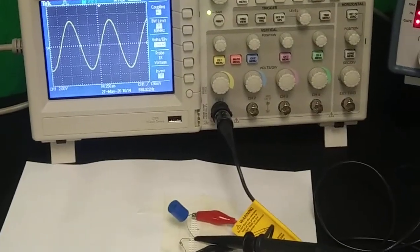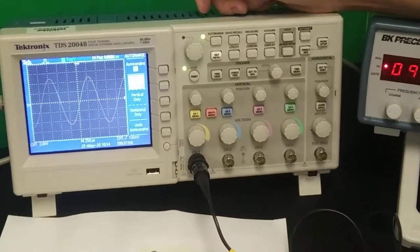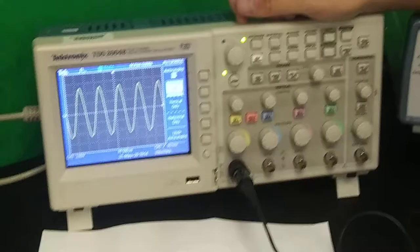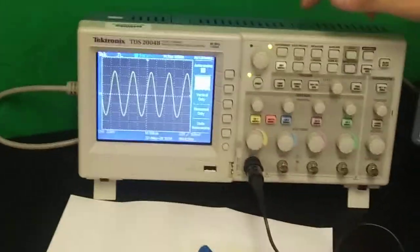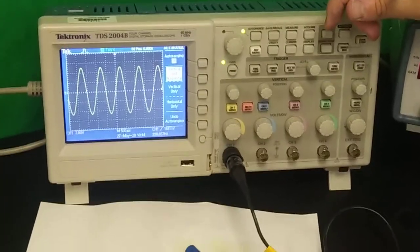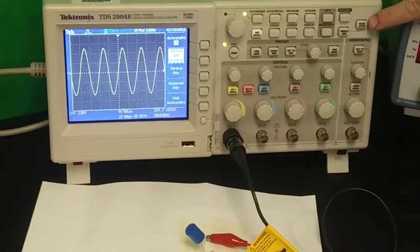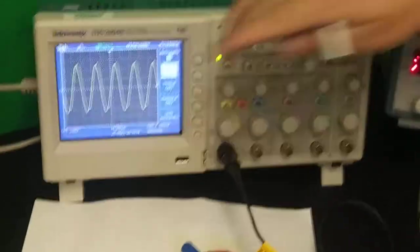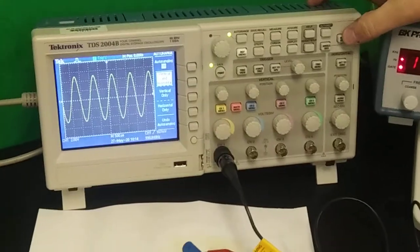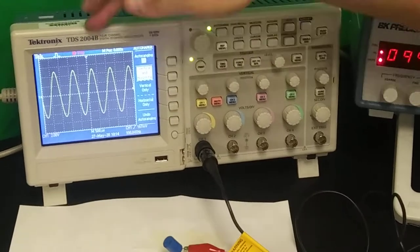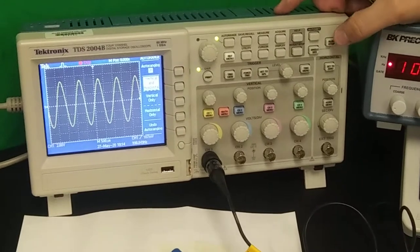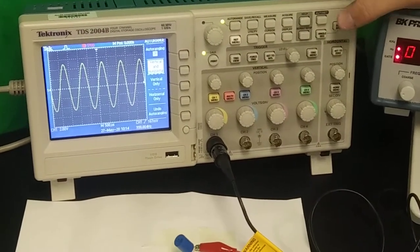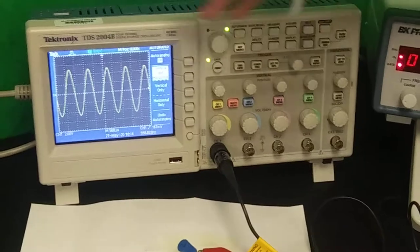Auto range, you've seen me hit this many times, this is kind of like get out of jail free. If I hit auto range, it will go and will pick a range it thinks is suitable. Now what happens here is sometimes you'll get a sloppy signal and every once in a while, if your signal is floating all over, there's a useful button here, run stop.